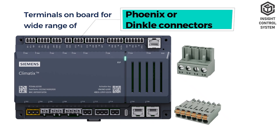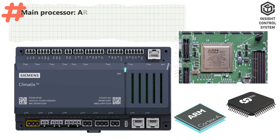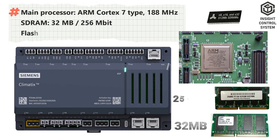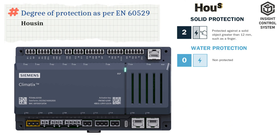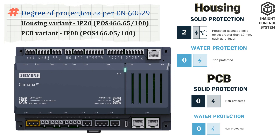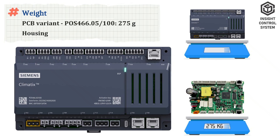Terminals on board support a wide range of Phoenix or Dinkle connectors. The main processor is ARM Cortex-7 type at 188 MHz. SDRAM is 32 MB or 256 MB, and flash memory is 16 MB or 128 MB. The degree of protection for the housing variant is IP20 and the PCB variant is IP00. Weight for the PCB variant is 275 grams, and for the controller with housing variant is 427 grams.